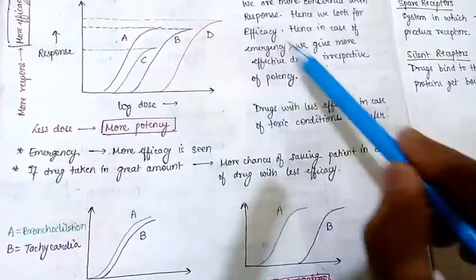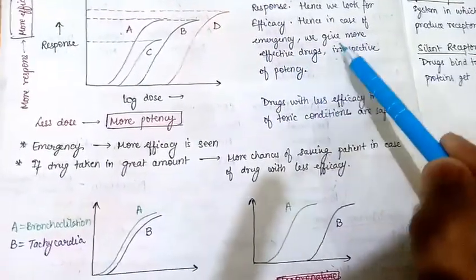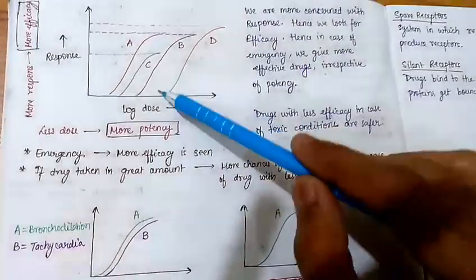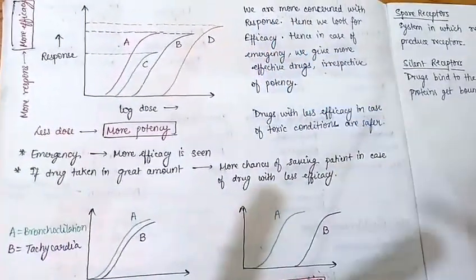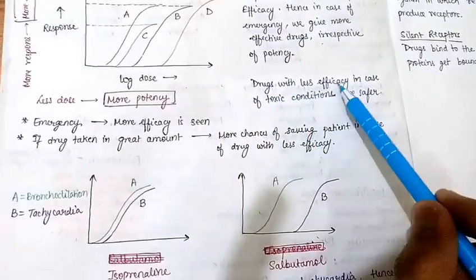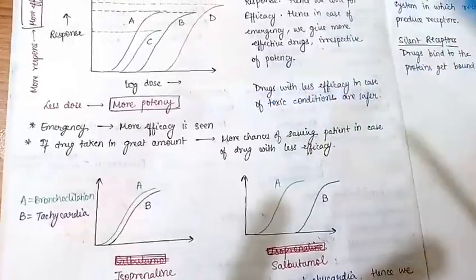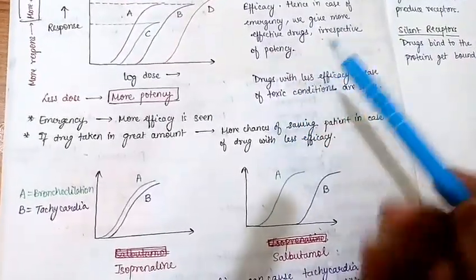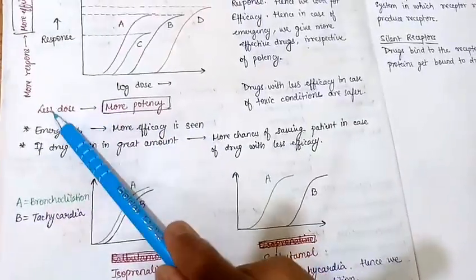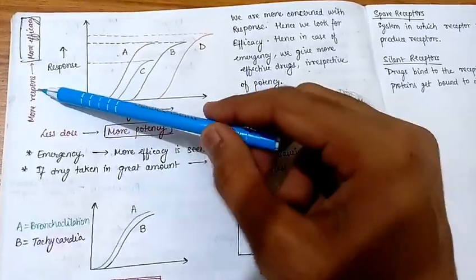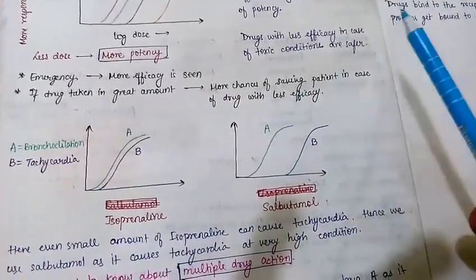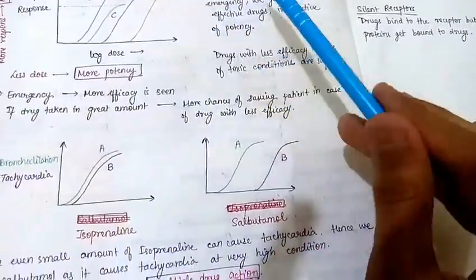In emergency situations we look for the most efficacious drugs — drugs with higher efficacy — because we need the highest response to save the patient, irrespective of potency. However, one drawback is that drugs with higher efficacy can cause toxicity, while drugs with less efficacy can lower toxicity. Remember: less dose means more potency, and more response means more efficacy.